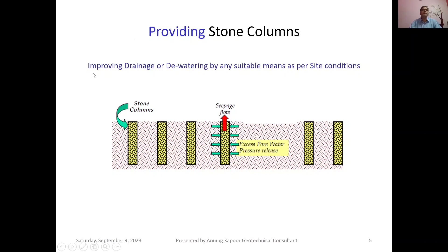Providing stone columns improves drainage or dewaters the soil by any suitable means as per site conditions. As shown in the image, the red arrow indicates seepage flow and the blue arrows show that excess pore water pressure is released. This method is very effective in cohesive soils, or as the site case may be.